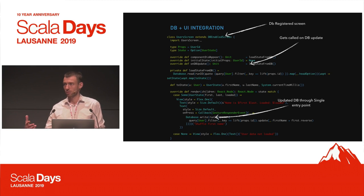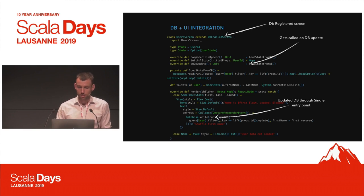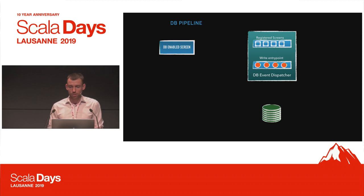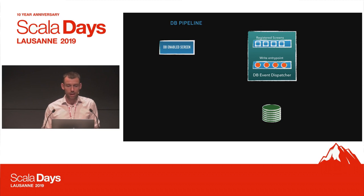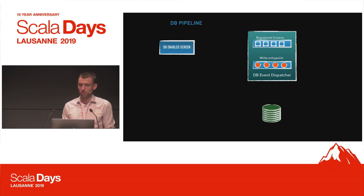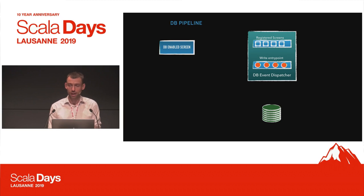You're not directly mutating the state of the screen — you're going through the database, and that propagates to all the rest of the screens. From a data flow perspective: you have one DB-enabled screen and a component called the db-event dispatcher. Whenever the screen appears, it registers itself with the dispatcher on mounting, and initially reads state from the database and displays it.